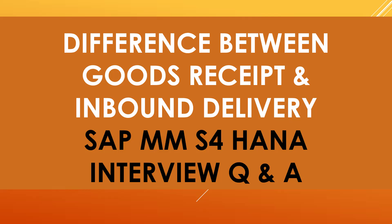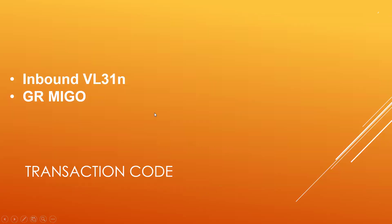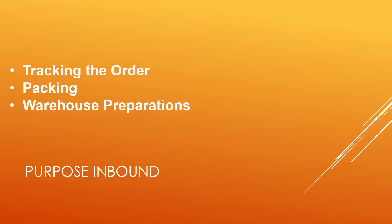Watch this video till the end. If you want to know how to do goods receipt, check the link provided in the description. Now I'm going to discuss only about inbound delivery. Inbound delivery is done in VL31N transaction code, and normal goods receipt is done with reference to a purchase order in MIGO transaction.